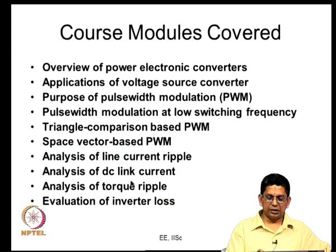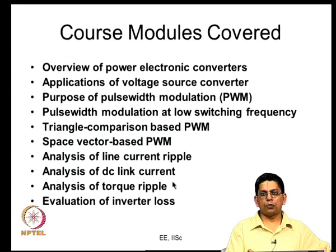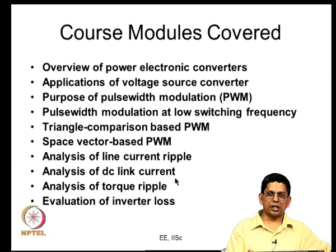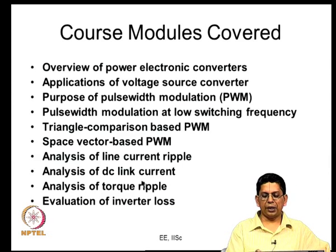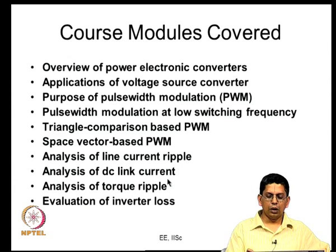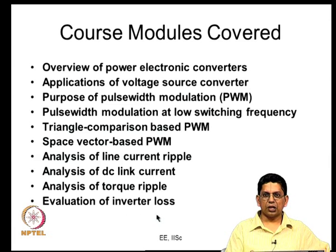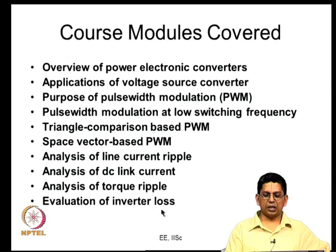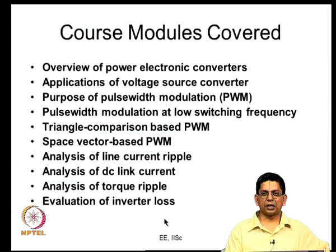Up to this point we ignored losses, though from the line current ripple you can get additional copper loss in series elements. From DC link current you can calculate capacitor RMS current, and using RMS current and ESR you can calculate capacitor loss. Now our focus shifts to switching losses and conduction losses in power semiconductor devices.